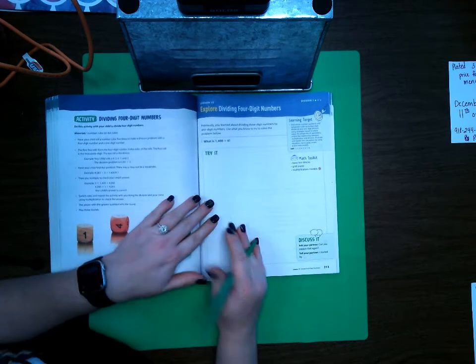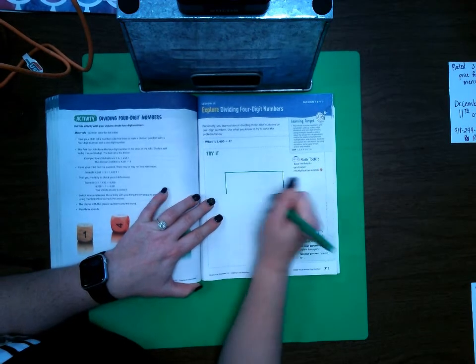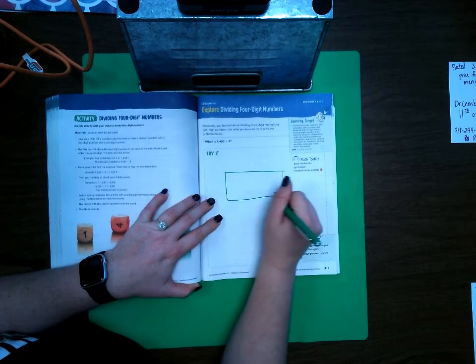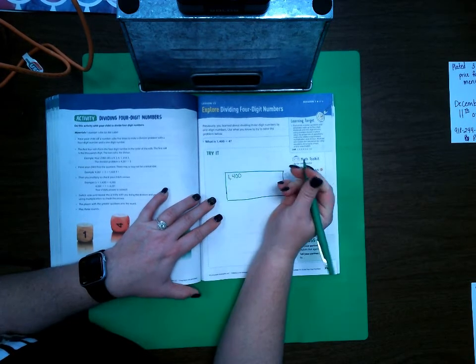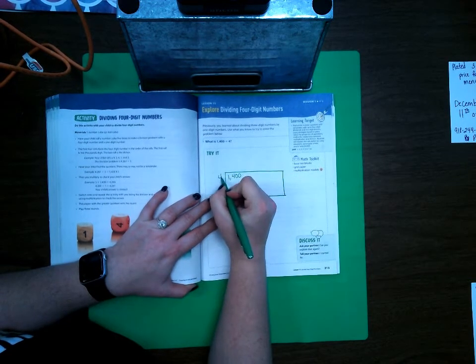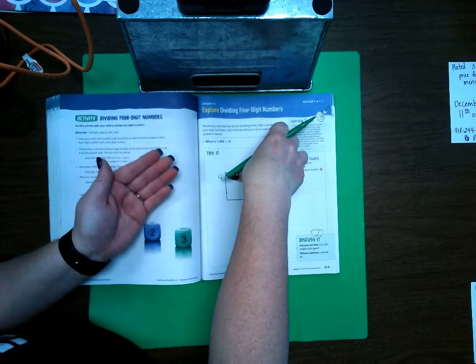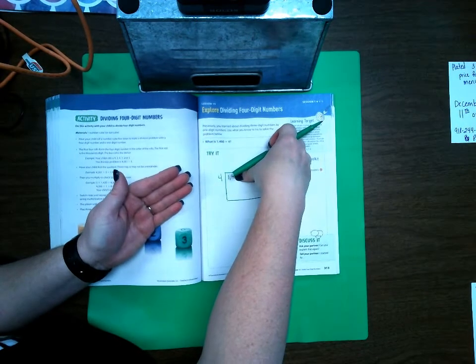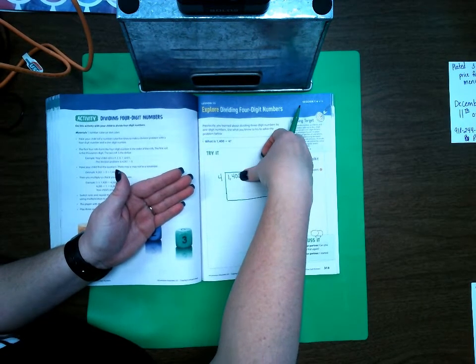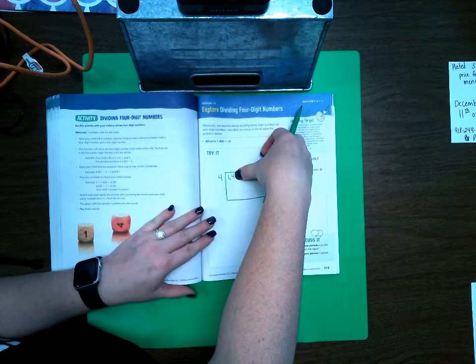For four-digit numbers, we are going to draw our area model. Now, we are going to put our 1400 right here and we are dividing by four. If I have one M&M in my hand, can I take four out? No. If I have 14 M&Ms in my hand, can I take four out? Yes. And how many times?